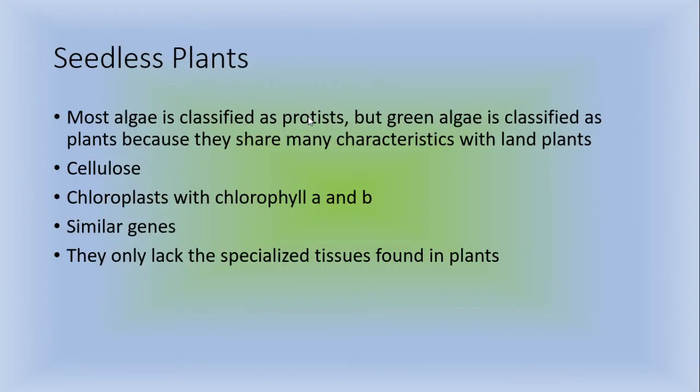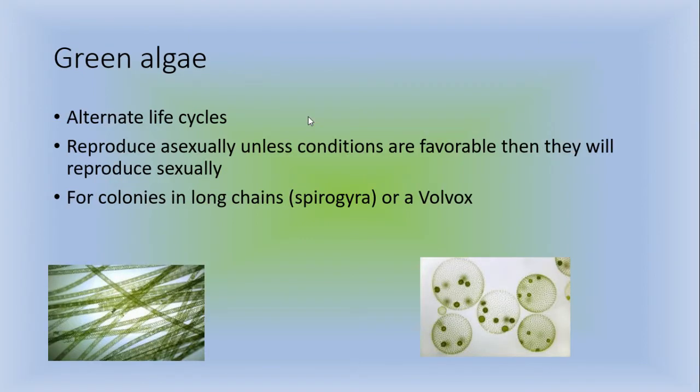Seedless plants. So most algae is classified as protists, but green algae is classified as plants because they share many characteristics with land plants. They have cellulose, they have chloroplasts which contain chlorophyll A and B, they have similar genes to plants. They only lack the specialized tissues that are found in plants. So you may think algae is a plant, you may not, but we tend to group it along with plants.